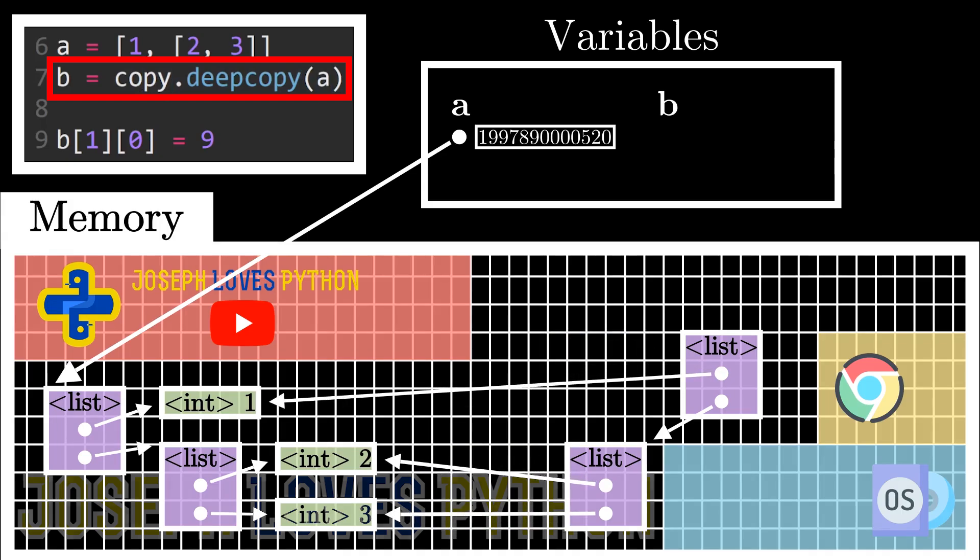Even if two pointers point to the same immutable object, modifications won't affect other variables. If you watched the previous video on mutability, you understand exactly why. We end up with a completely independent copy of the overall structure that has absolutely nothing to do with the original data.